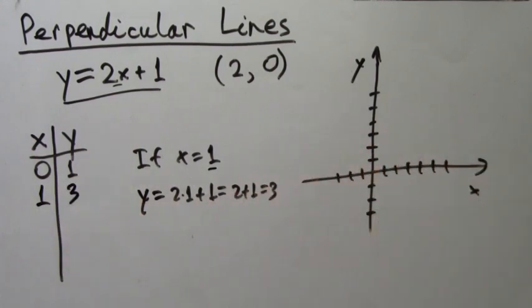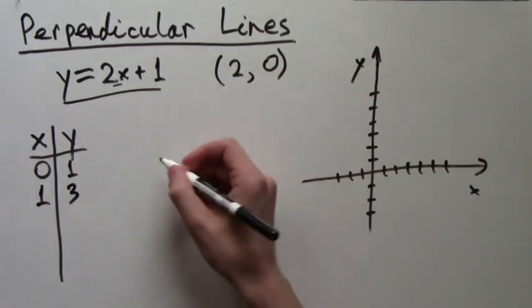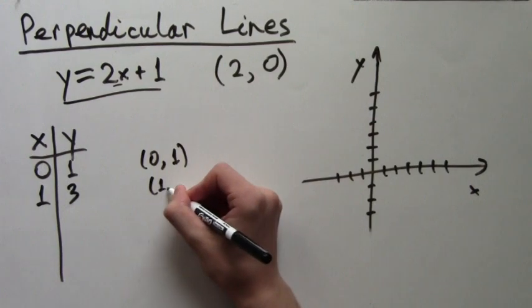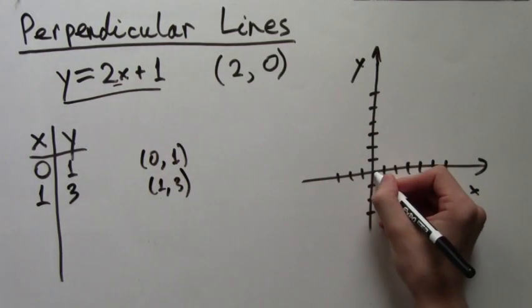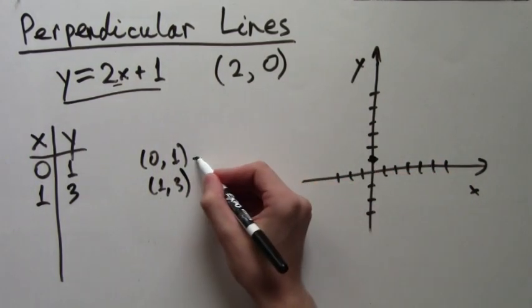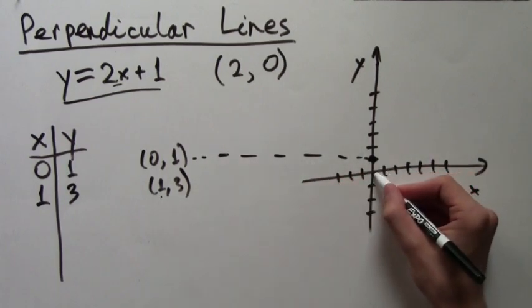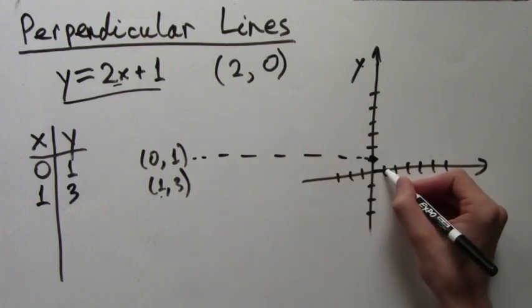This gives us two points from which we can make the line, which is the graph of the function. 0, 1 is 1 above the origin. And 1, 3 is 1 to the right of and 3 above the origin.